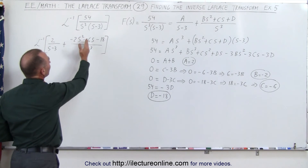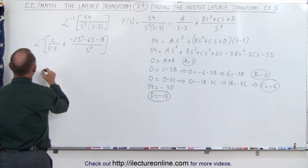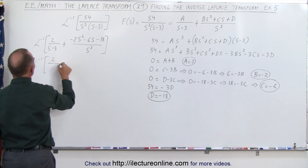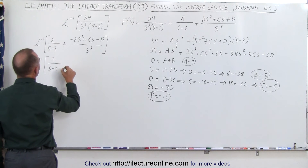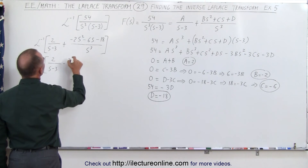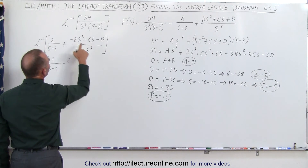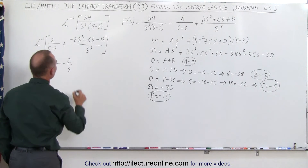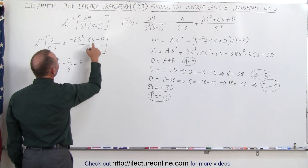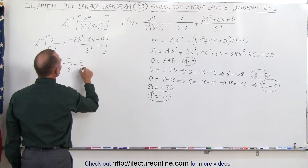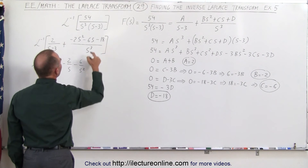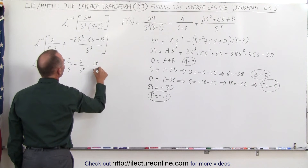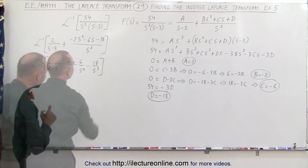Before we can take the inverse Laplace transform, I want to write this as three separate fractions: the inverse Laplace transform of 2 over s minus 3, minus 2 over s — since s squared divided by s cubed becomes 1 over s — minus 6 over s squared, and minus 18 over s cubed.